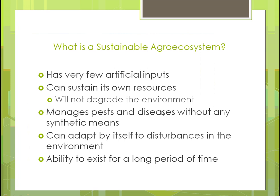But what is a sustainable agroecosystem? It has very few artificial inputs — basically, you don't use as much mechanization, you don't use synthetic fertilizers and pesticides. Can it sustain itself with its own resources? In other words, can it grow whatever plants you're trying to grow in that area, on that acreage, without degrading the soil? You manage pests and diseases without any synthetic means — using biological or natural means, so you aren't using things like Roundup.